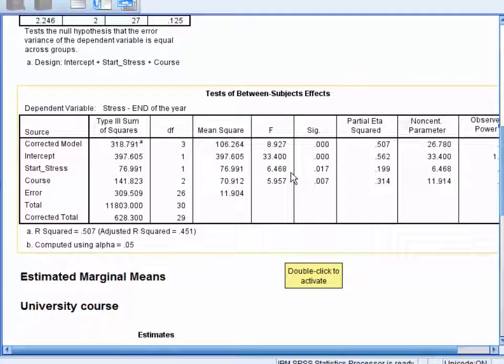This table also contains the information that we need for the write-up. More specifically, the test statistic, which we denote with an italicized capital letter F, the degrees of freedom, which we denote with an italicized DF, and our significance level, or p-value.